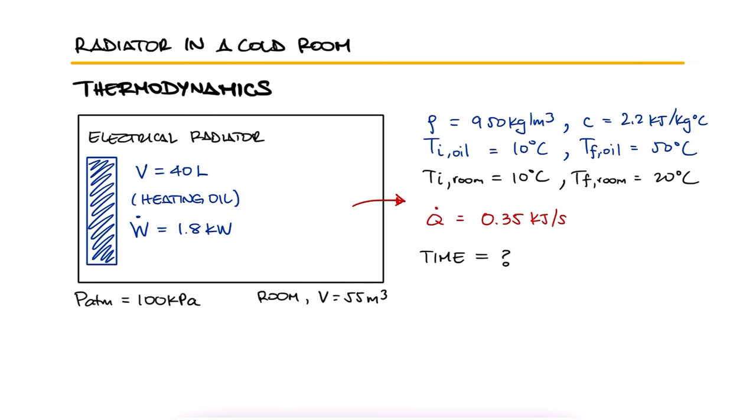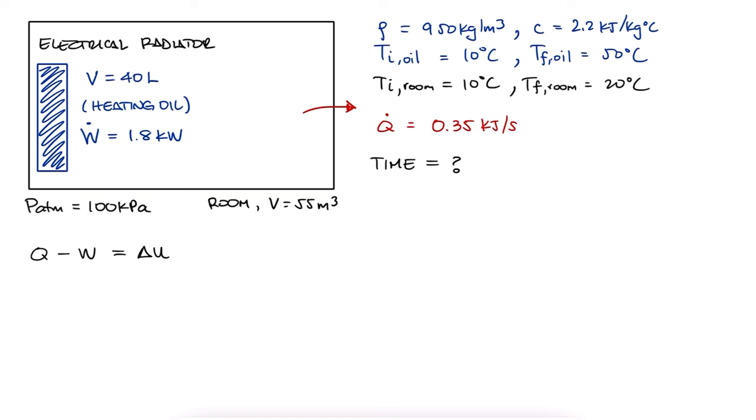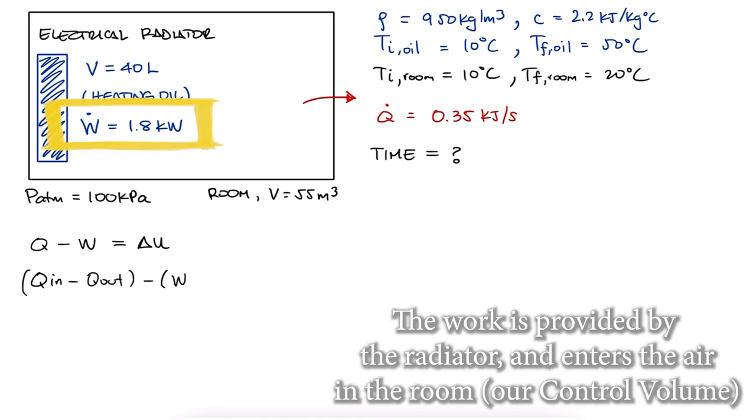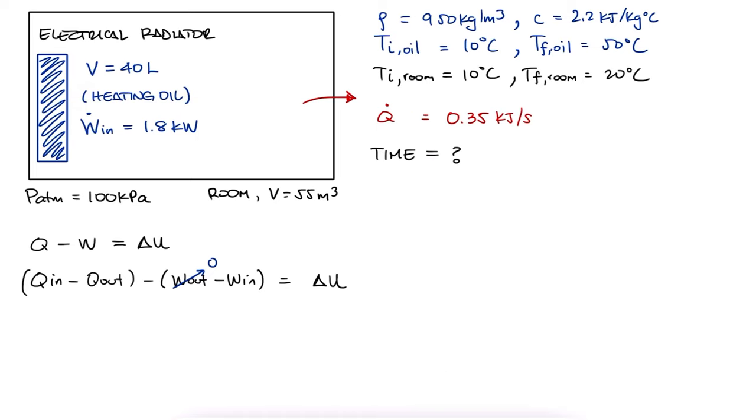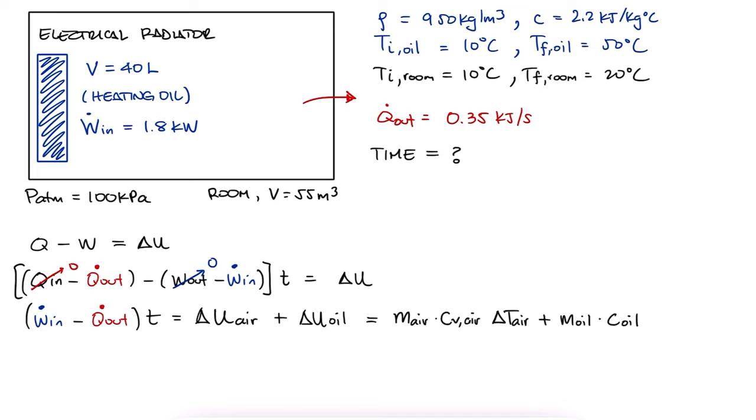Once again, we begin with our conservation of energy equation. We see that the work is coming into the system, so there is no work out. We are being told that the heat is leaving the system, so there is no heat coming in. And since these are energy rates, we can multiply by time to find the total energy change due to heat and work. This is equal to the total change in internal energy for both the air and the oil. The change in internal energy is equal to the mass times the specific heat times the change in temperature.